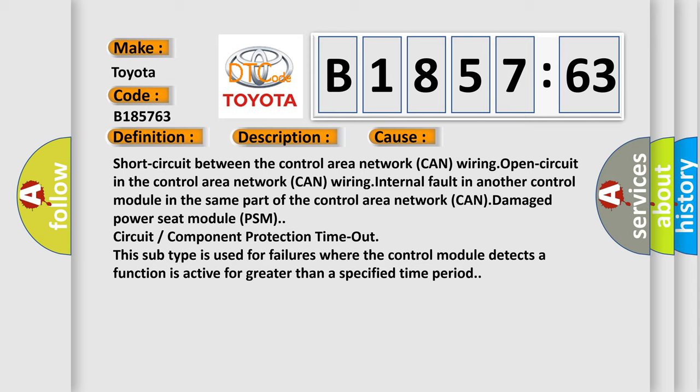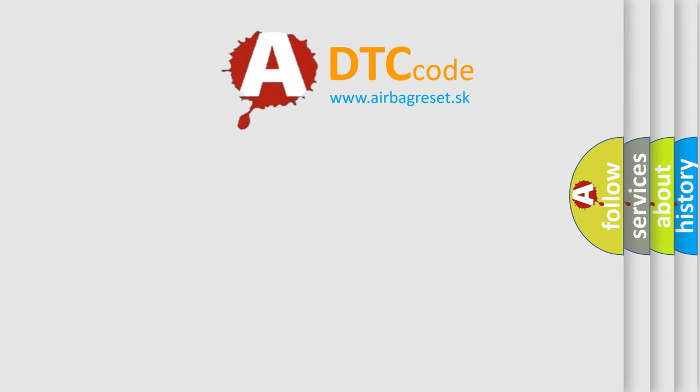Short circuit between the control area network CAN wiring, open circuit in the control area network CAN wiring, internal fault in another control module in the same part of the control area network CAN, damaged power seat module PSM circuit or component protection timeout. This subtype is used for failures where the control module detects a function is active for greater than a specified time period.